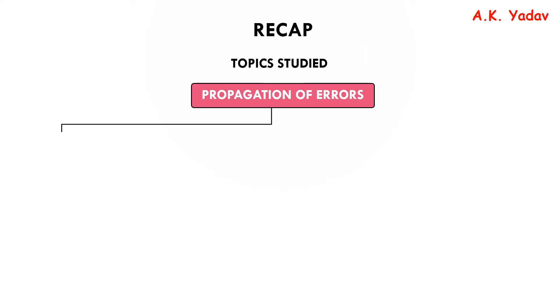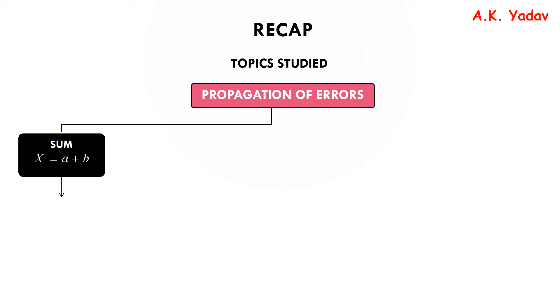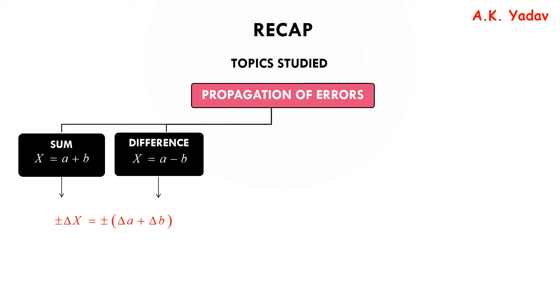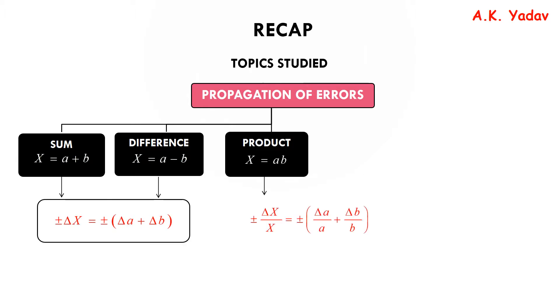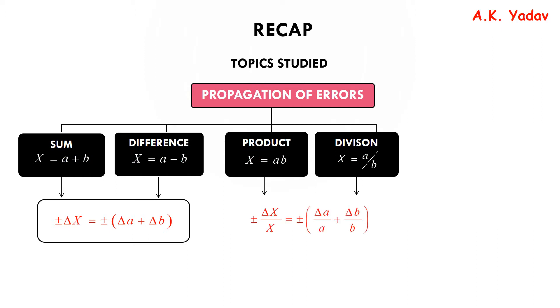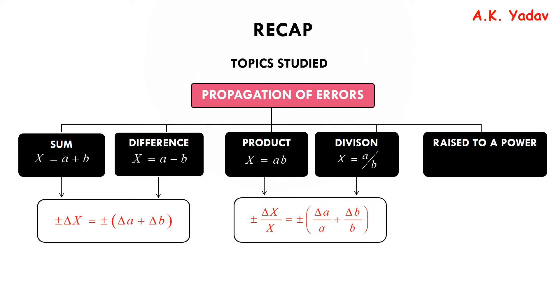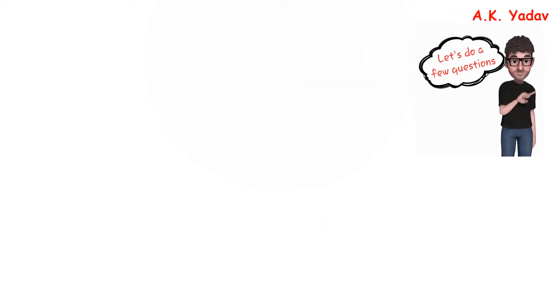Let's start with a quick recap. For propagation of error, whether the quantity is added or subtracted, the error is added: delta x = ±(delta a + delta b). In case of multiplication and division: delta x / x = ±(delta a / a + delta b / b). And for a quantity raised to a power: delta x / x = ±(n × delta a / a).